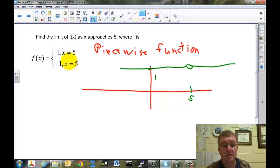Because it says when x is not 5, the function is 1. So when x is 3, the function is 1. When x is 1, the function is 1. When x is 0, the function is 1. When x is 6, the function is 1. So we just get a horizontal line.